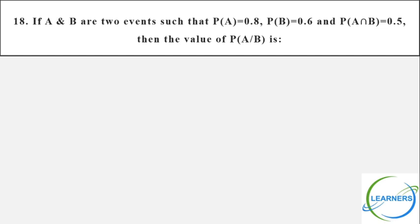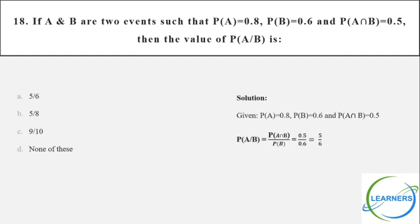If A and B are two events such that P(A) = 0.8, P(B) = 0.6 and P(A∩B) = 0.5, then the value of P(A|B). You can use the direct formula: P(A|B) = P(A∩B) / P(B) = 0.5 / 0.6 = 5/6.